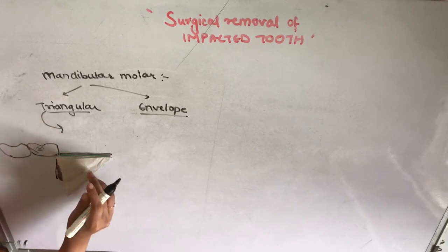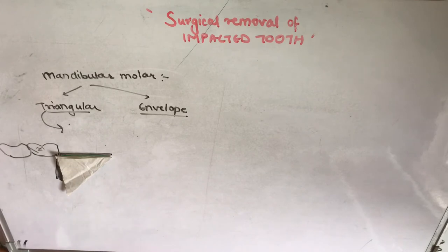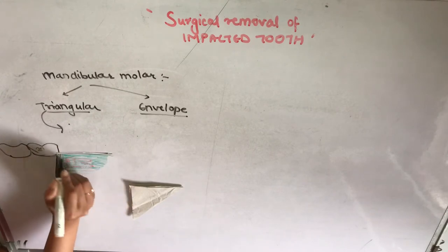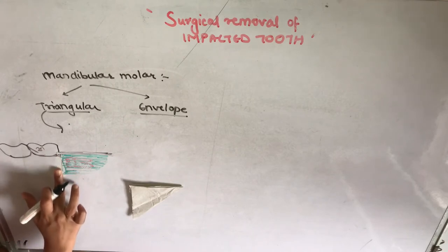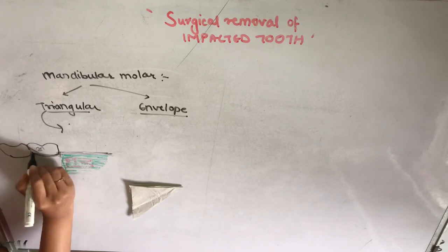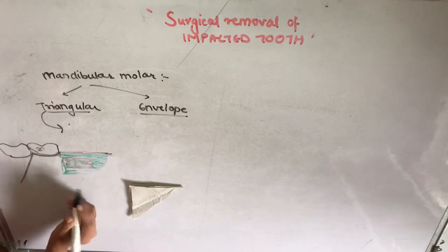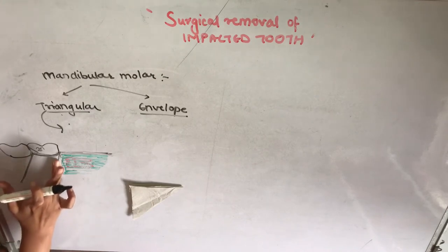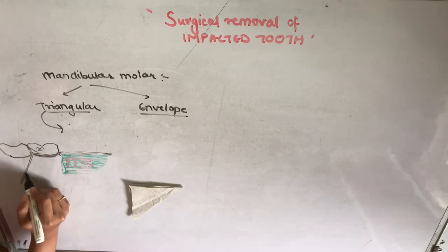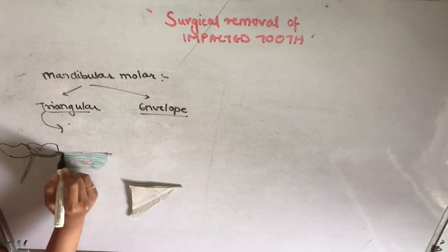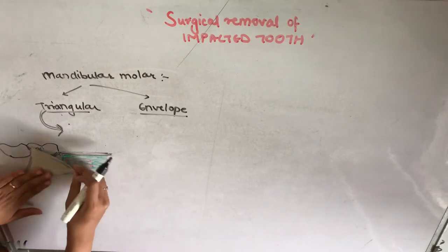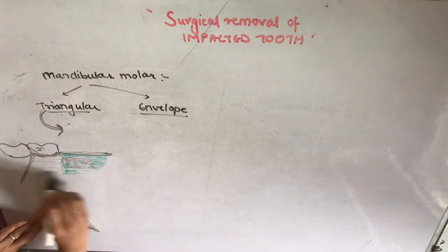If the impacted tooth is deeply placed, the triangular incision is modified: the incision extends from the anterior border of the ramus and also involves the second molar's crevice, followed by an anterior releasing incision. This gives a larger triangular flap to provide better access to the deeply impacted tooth.